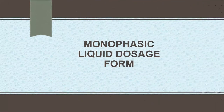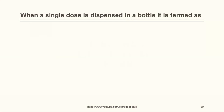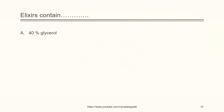Now moving to the next topic — monophasic liquid dosage form. When a single dose is dispensed in a bottle, it is termed as: mixture, draught, drop, or elixir. The correct answer is draught. Elixirs contain: 40% glycerol, 40% alcohol, 66.7% sucrose, or none of these. The correct answer is 5–40% alcohol.